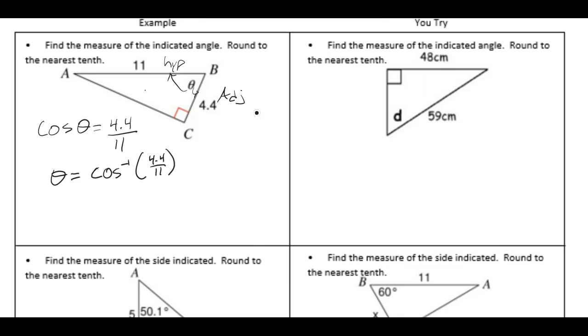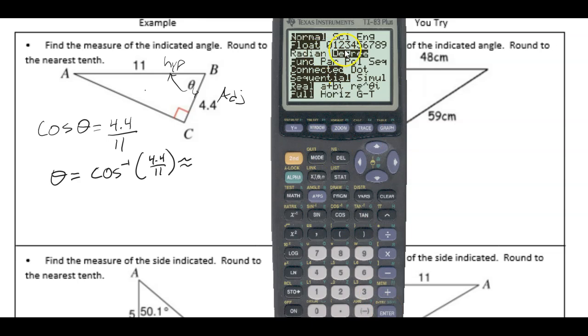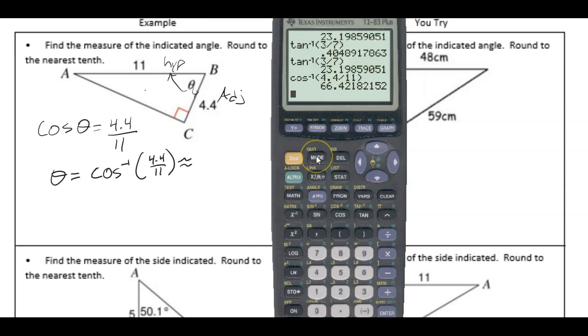And on a calculator we approximate this in degree mode. And let's see what we get. So arc cosine 4.4 divided by 11. 66.4. Double check the mode is in degrees. It is great. 66.4 degrees.